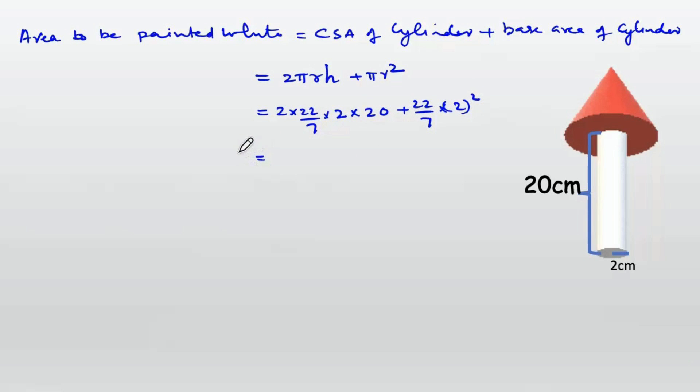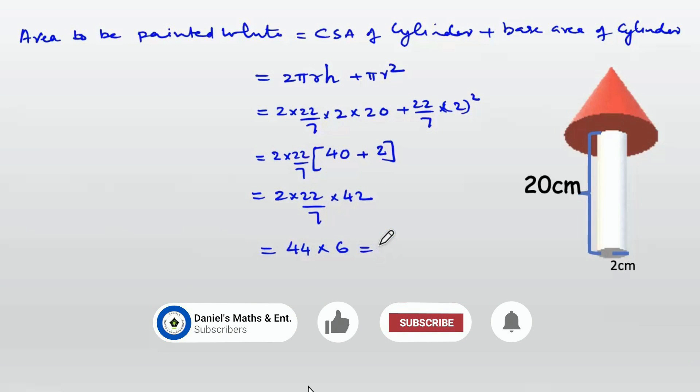Taking 2 into 22/7 common: 2 into 22/7 into 40 plus 2, which is 2 into 22/7 into 42 equals 44 into 6 equals 264 cm².